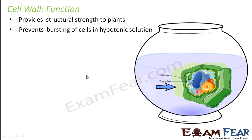To prevent bursting, you have the cell wall as additional support. The plasma membrane will allow water to pass through it, but the cell wall provides an extra barrier. When too much water enters, it exerts pressure on the cell wall, and the cell wall exerts a counter pressure in return. Therefore, the plant cell is able to withstand greater changes in surroundings compared to animal cells. Animal cells do not have a cell wall, so they might burst in the same situation, but plant cells are protected by the cell wall in hypotonic solution.